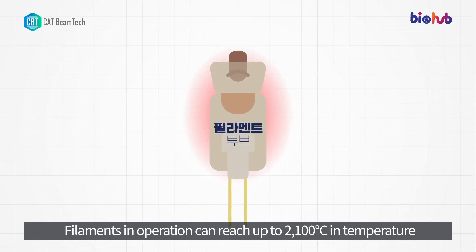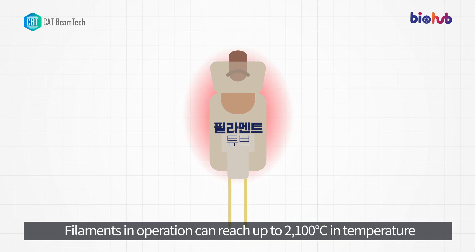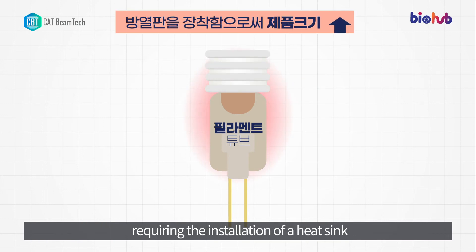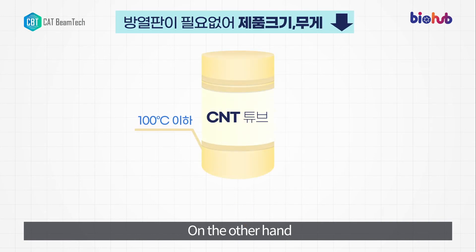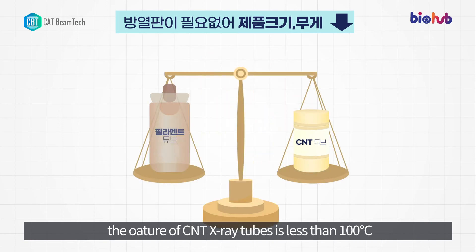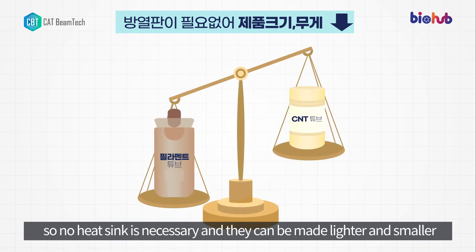The last benefit is miniaturization. Filaments in operation can reach up to 2,100 degrees Celsius in temperature, requiring the installation of a heat sink. On the other hand, the operating temperature of CNT X-ray tubes is less than 100 degrees Celsius, so no heat sink is necessary and they can be made lighter and smaller.